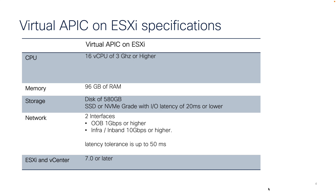Let me quickly show you the specifications and requirements if you choose to deploy a virtual APIC. You're going to put this on an ESXi host — AWS is also possible but I'm not covering that in this video. You need a relatively modern and capable server because there's a certain number of vCPUs and memory required. Also be aware that you're going to need fast storage — SSD or NVMe. The last major consideration is you need to be running ESXi 7.0 or later. VMware has already announced end of life for ESXi 6.7 and earlier, so everyone should be on 7.0 or later. There is also a latency tolerance of up to 50 milliseconds between your virtual APICs and the fabrics they'll be managing.